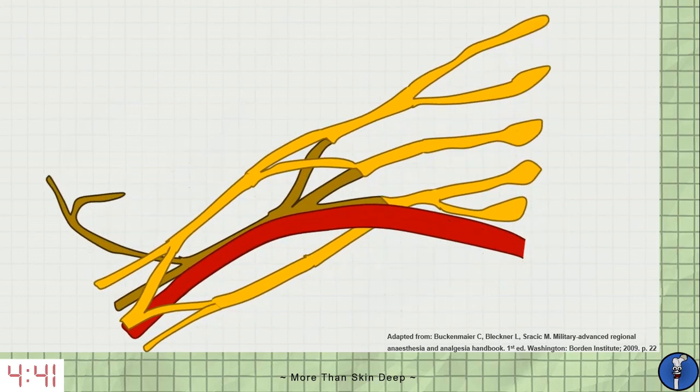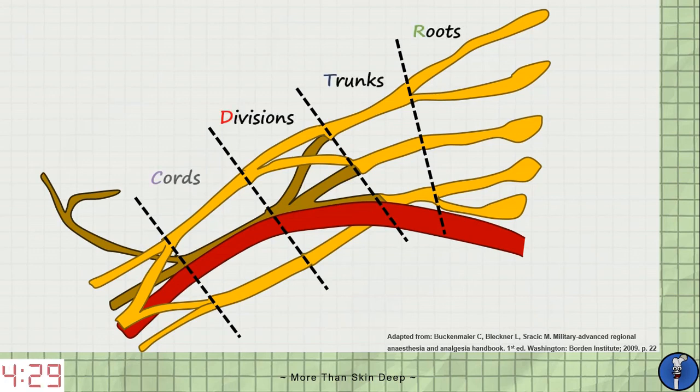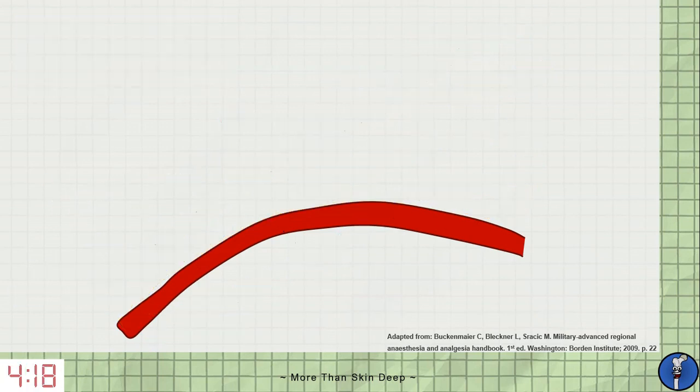The most common way to divide up the brachial plexus is to chop it into five segments. These are largely academic but they're helpful when learning it for the first time. These segments are the roots, trunks, divisions, cords and branches. They can be remembered using the mnemonic read that damn cadaver book. Now let's take a closer look at these five segments.